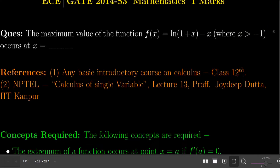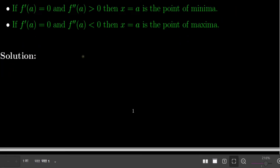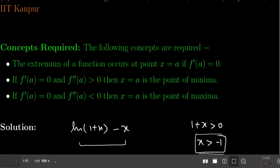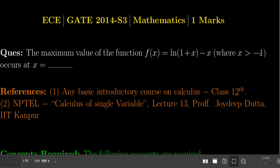The function given is f(x) = ln(1 + x) - x. For the logarithm to be defined, its input must always be positive, which requires x > -1. So the domain of this function is x > -1, which is precisely the condition already stated in the question.